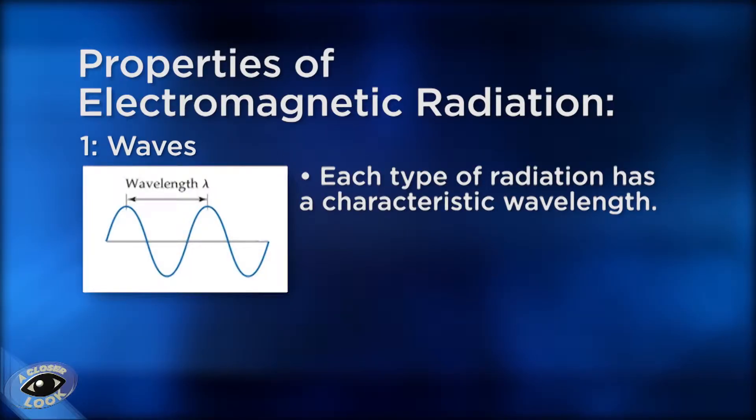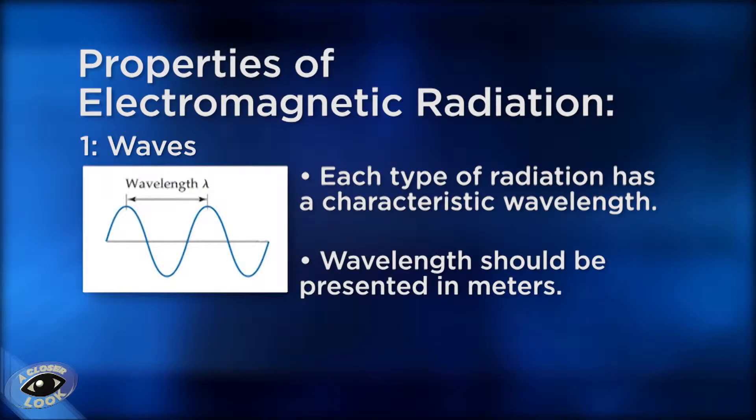The first property of electromagnetic radiation is that each type has a characteristic wavelength, which is the distance between two corresponding points on a wave. Before we do any calculations of waves, we want to have our measurement of wavelength in meters. If the wavelength measurement is not given in meters, it should be converted to meters before plugging it into the equation.